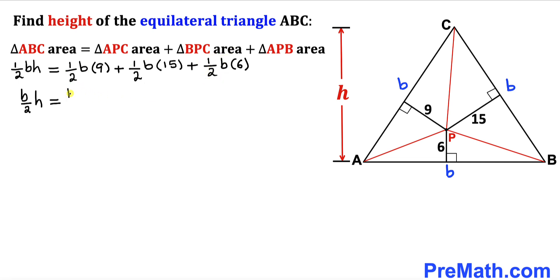So therefore I can write this b divided by 2 outside, and inside these parentheses we are left with 9 plus 15 plus 6. And now we can see inside this parentheses, 9 plus 15 plus 6 is going to give us 30.